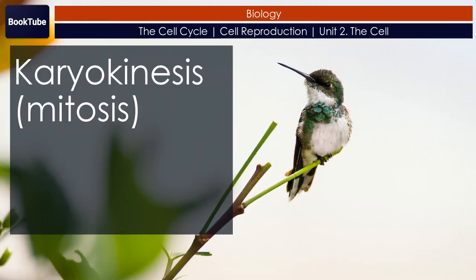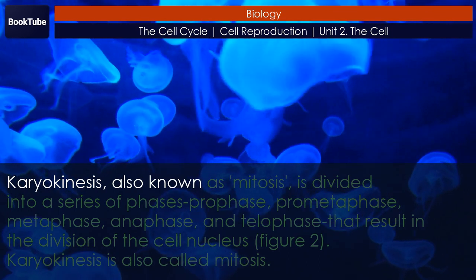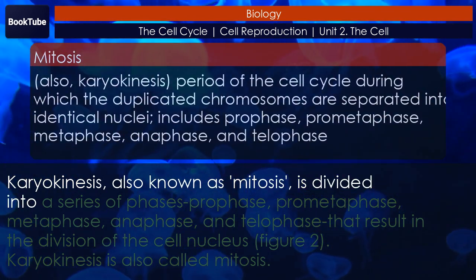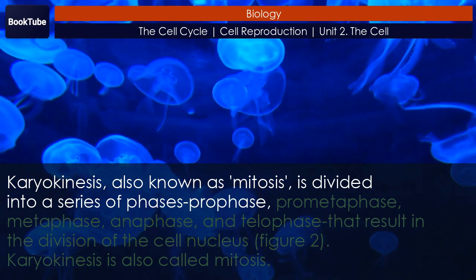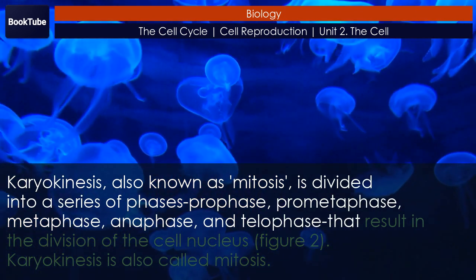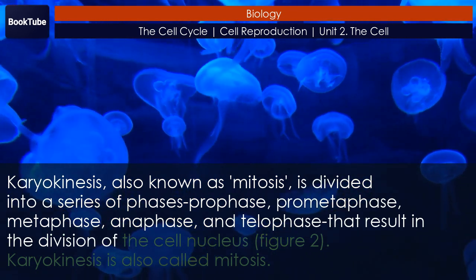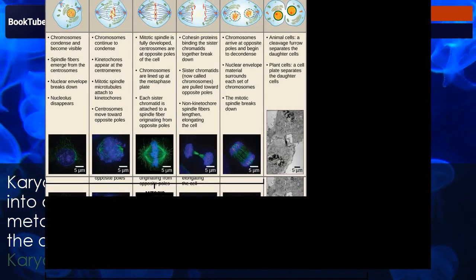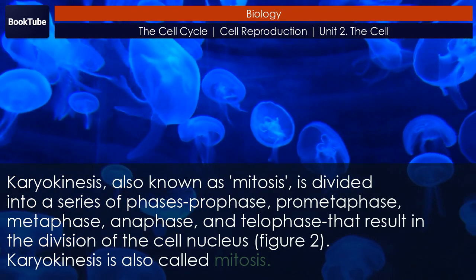Karyokinesis, also known as mitosis, is divided into a series of phases — prophase, prometaphase, metaphase, anaphase, and telophase — that result in the division of the cell nucleus.